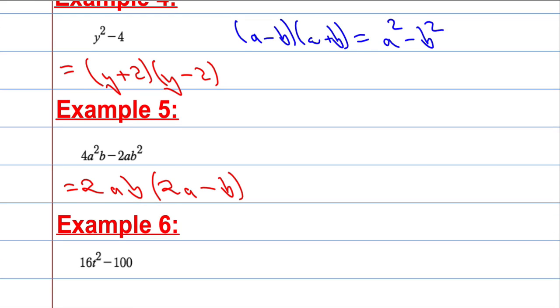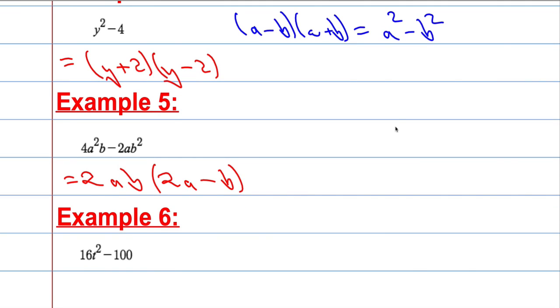Now what about number 6? This is looking a little bit familiar, just like the guy up here. Difference of two squares again. So I can see that this is a square number, and this is a square number, and there's a difference, so it's the difference of two squares.